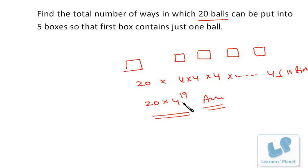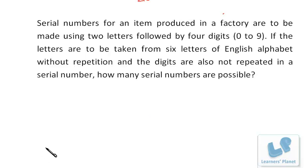Let's see this question: Serial numbers for an item produced in a factory are to be made using two letters followed by four digits, 0 to 9. If the letters are to be taken from six letters of English alphabet without repetition and the digits are also not repeated in a serial number, how many serial numbers are possible?